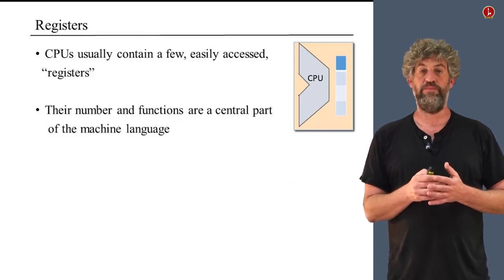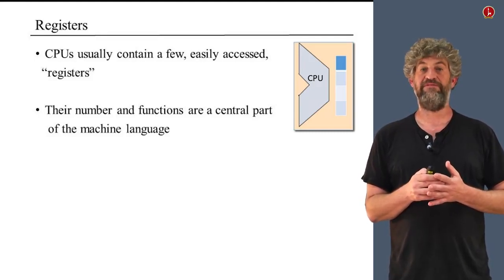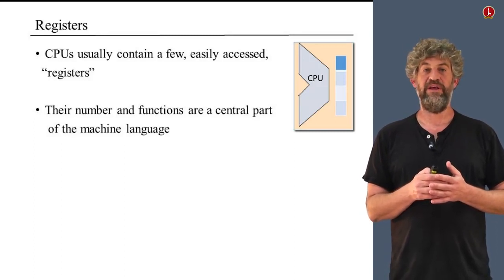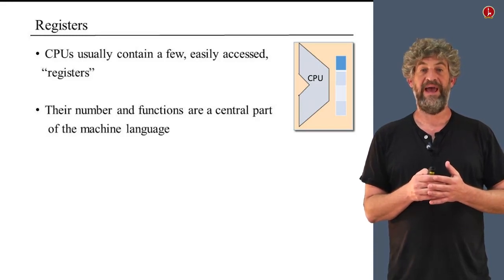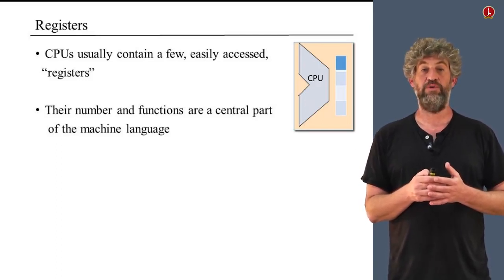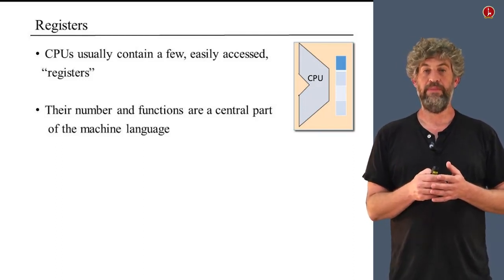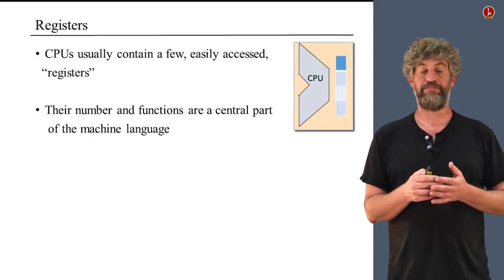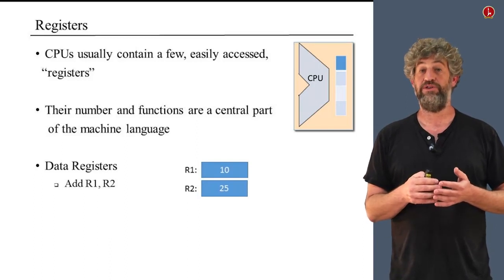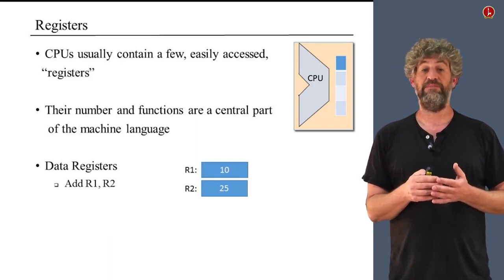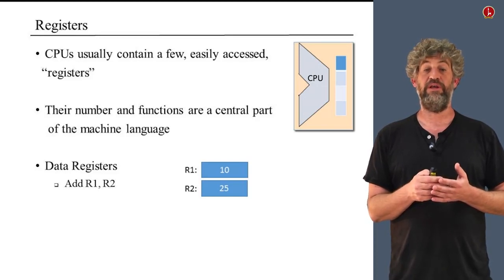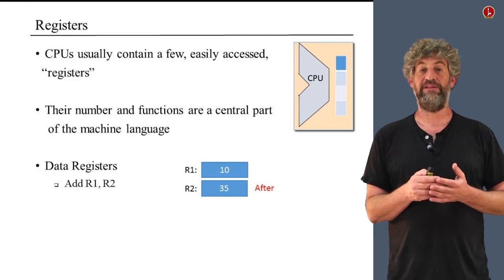What we're going to discuss now is how registers — the smallest memory — which usually reside really inside the CPU, are handled. Almost every CPU has a very small amount of memory registers located inside the CPU. Their type and functionality is really part of the machine language. Since there are so few of them, addressing them requires very few bits, and getting information from them is extremely fast. They are built from the fastest technology available and are already inside the CPU, so there is no delay in getting any information from there. The first kind of usage for these registers is just for data — for example, we can put numbers in them and have operations like: add register one to register two, meaning the contents of register one will be added to the contents of register two.